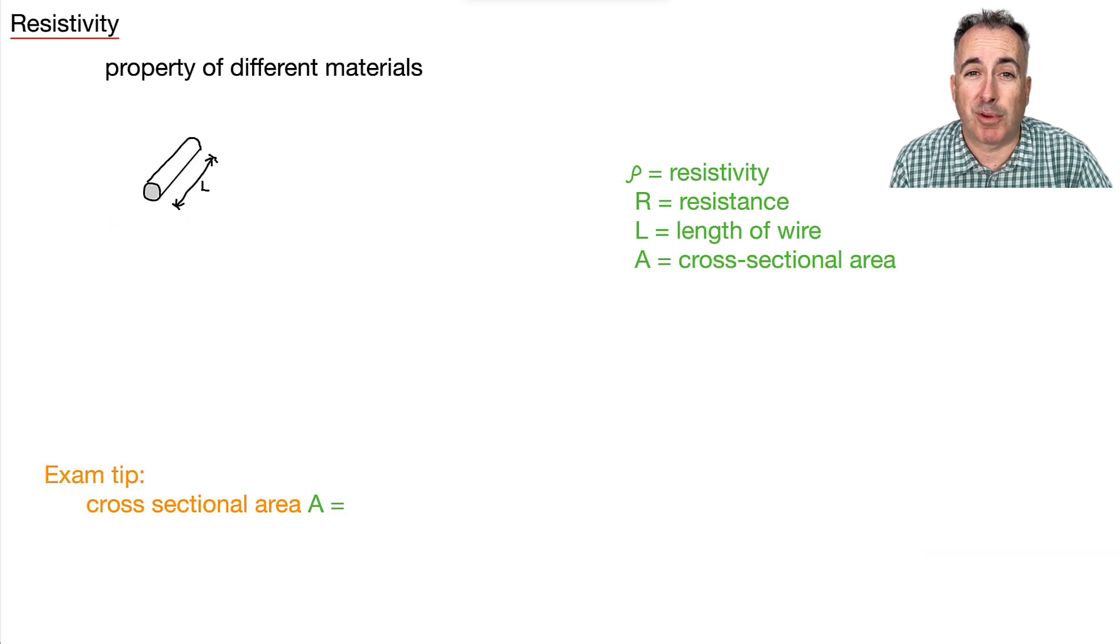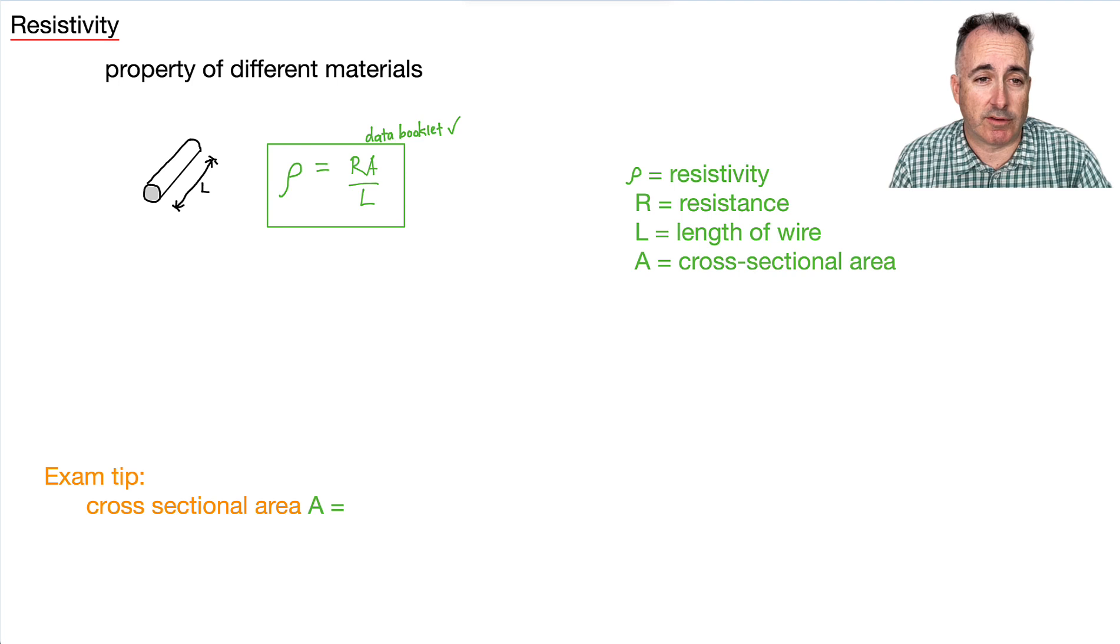So we have another property of materials. It's called resistivity. So each different material has a different resistivity. And we have an equation for it. It goes like this. This is ρ equals R A over L. And this, by the way, this would be the length of a wire here. So that's L. That would be the length of a wire measured in meters.